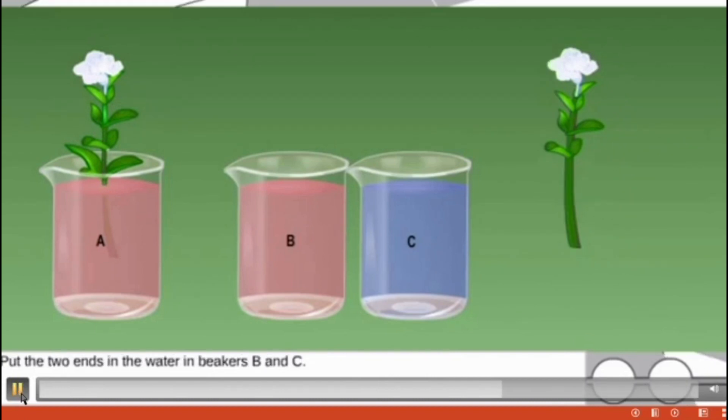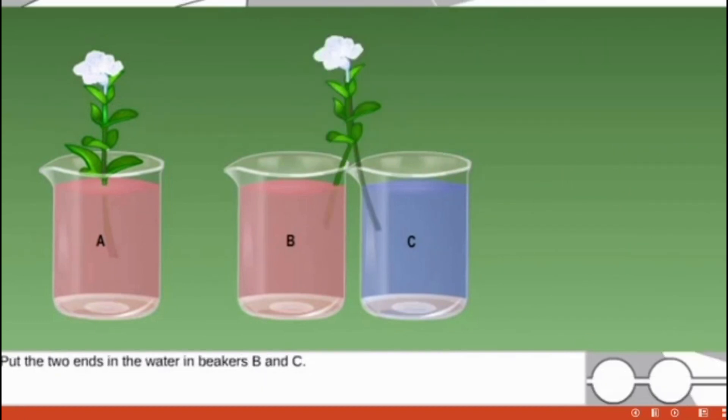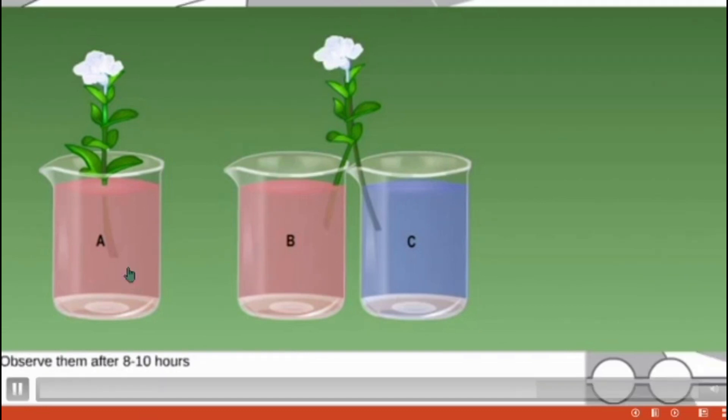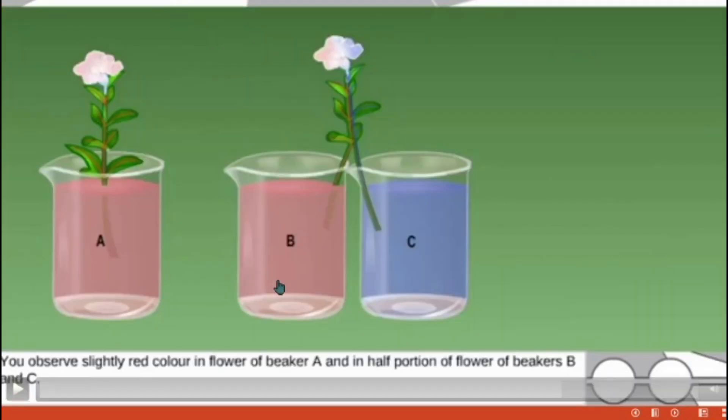We take the stem and we cut the middle of it. We are not cutting it separately, but it is in a look like a tied manner. After 8 to 10 hours, we will observe what happened. Both beakers B and C, the B contains pink color and C contains blue color. It is in the upward region, the middle of the stem region. Half of the region is pink color, half of the region is blue color, and changes also in the flowers: half of the region of flowers is pink and also blue.